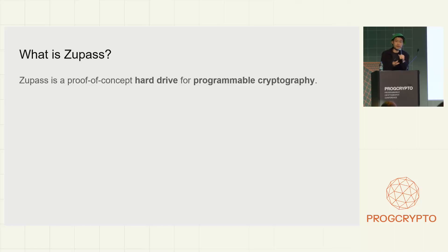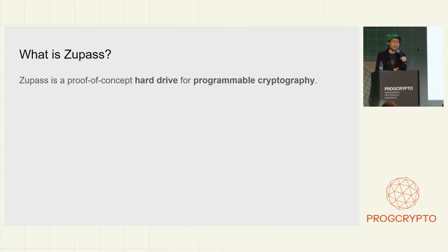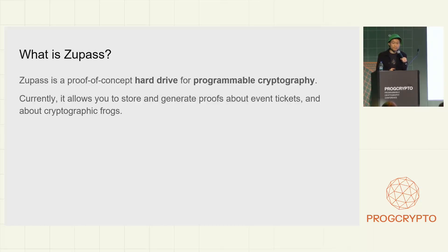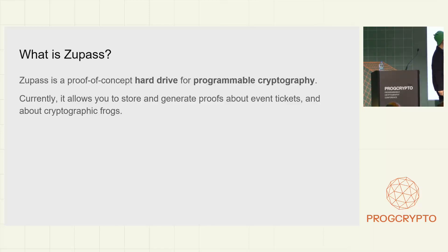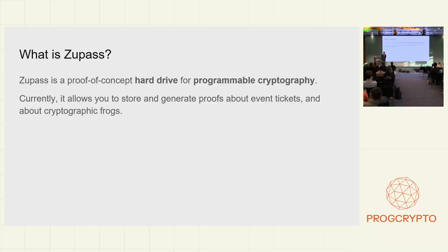Let's start with a quick one-sentence description of what ZooPass is. ZooPass is something I like to think about as a proof-of-concept hard drive for programmable cryptography. This sentence on its own might not make too much sense, so let's dig into what each of those components means. The interface you've probably interacted with enables you to store and generate proofs about things like event tickets and cryptographic frogs — those are currently the two things you can hold in your ZooPass.